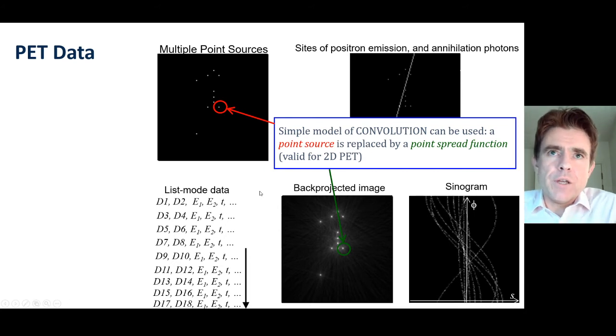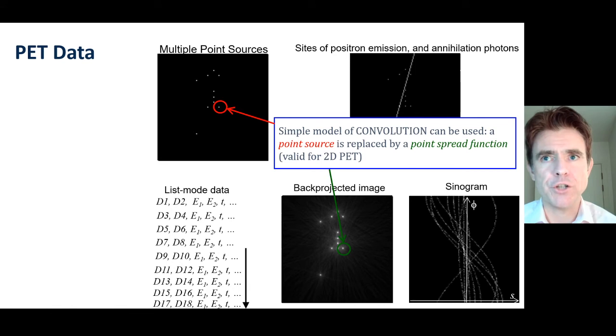This motivates a simple model for back-projected images in PET. Each point source inside the scanner field of view has been replaced by what's often called a point-spread function—I prefer point-response function. This is an example of a linear shift-invariant mapping, because it doesn't matter where the point source is, the shape of the function response is the same, just shifted to the corresponding location. Convolution is a great model for a back-projected PET image in 2D.